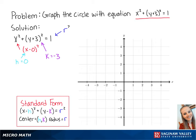We also know that r squared is equal to 1. This means that r is equal to the square root of 1 which is equal to 1. Now we know that the center is at 0, negative 3 and that the radius is equal to 1.